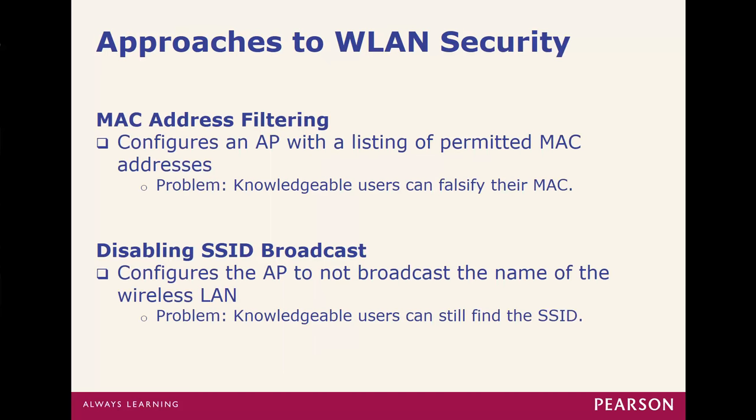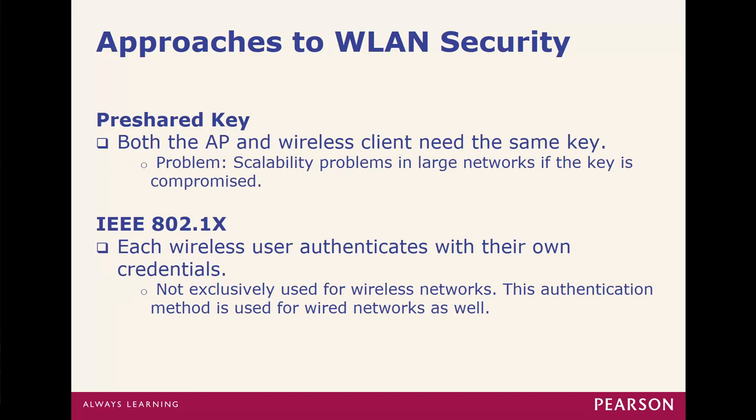Approaches to wireless security include MAC address filtering — filtering which MACs are allowed to access the access point. That's more cumbersome because you need a list of all permitted MAC addresses, and with many laptops and mobile users it creates a lot of overhead. Another option is disabling the SSID — the name of the Wi-Fi — so it doesn't broadcast. The name won't show up when people try to find it, and if you don't have it pre-configured, it won't connect.